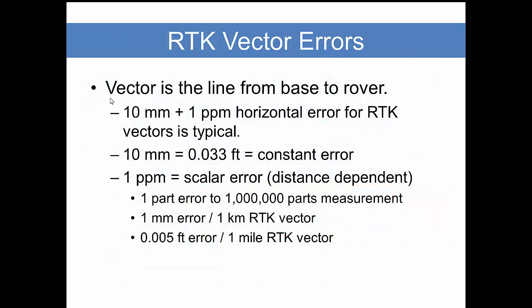When we talk about the vector, we're talking about that line from the base to the rover. The constant error is the error you can expect in any measurement. Any position that you collect with GPS or GNSS technology will have this type of constant error. That is, this is the radius of a circle inside which the truth is likely to fall.